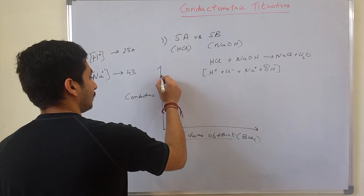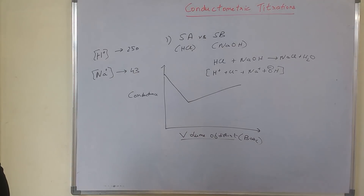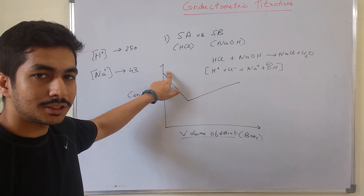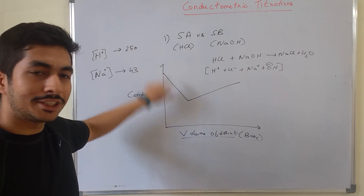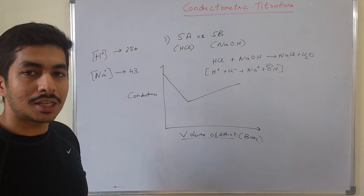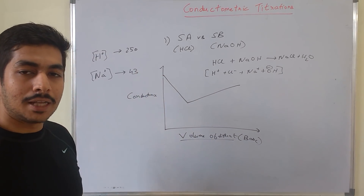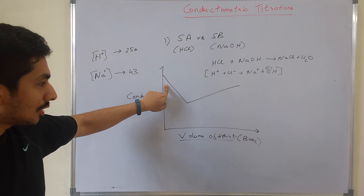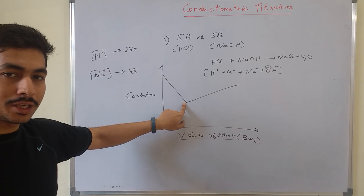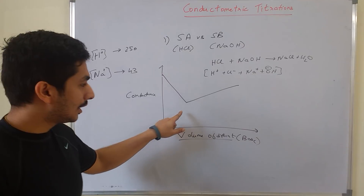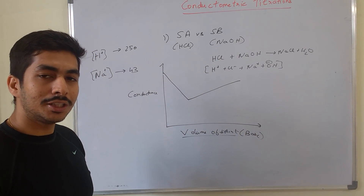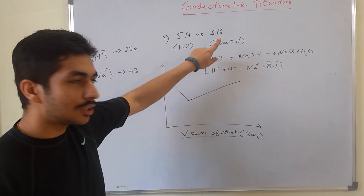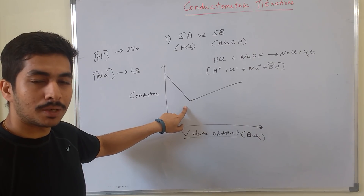This graph is not a perfect V-shape. The fall in conductance as H⁺ is being neutralized is very steep, whereas the increase in conductance after the equivalence point due to OH⁻ is not as steep. The reason is mobility: H⁺ has a very high mobility, so once H⁺ starts getting neutralized, conductance falls immediately at a very quick rate. But OH⁻, though mobile, is not as mobile as H⁺, so the increase in conductance is less sharp than the decrease.